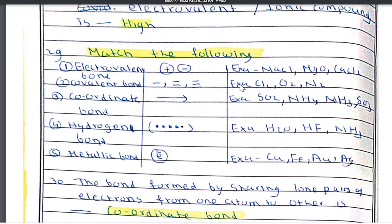In the match-the-following question, different types of bonds and their symbols are given. Electrovalent bond involves loss and gain of electrons forming cations and anions (+ and − signs). Covalent bond has three types: single, double, and triple bond. Coordinate bond (also known as dative bond) is shown by an arrow. Hydrogen bond is shown by a dotted line, and metallic bond involves delocalized electrons.